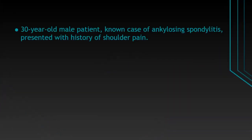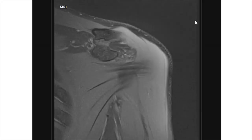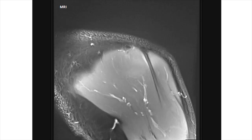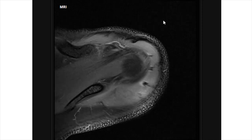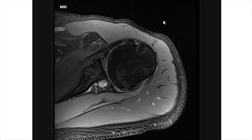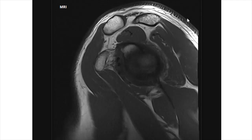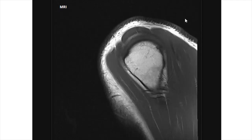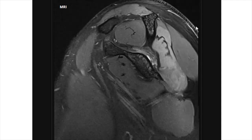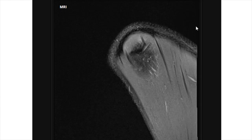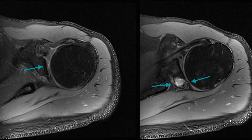Coming to the last case: a 30-year-old male patient, a known case of ankylosing spondylitis, presented with history of shoulder pain, and an MRI of the shoulder joint was performed. Axial PD fat sat images show a shallow appearing glenoid which does not closely follow the humeral head, with a posterior labral tear indicated by the arrow.